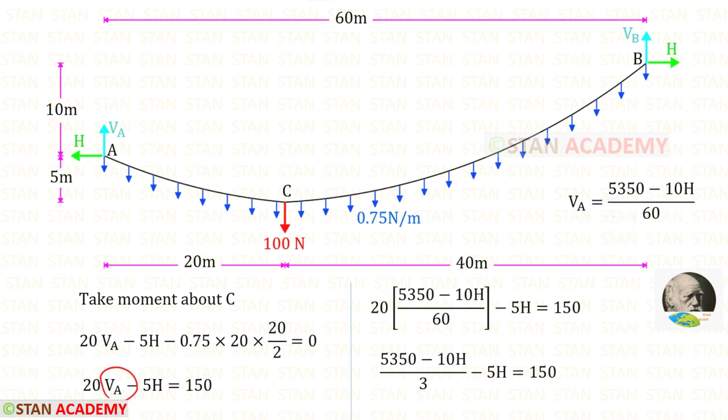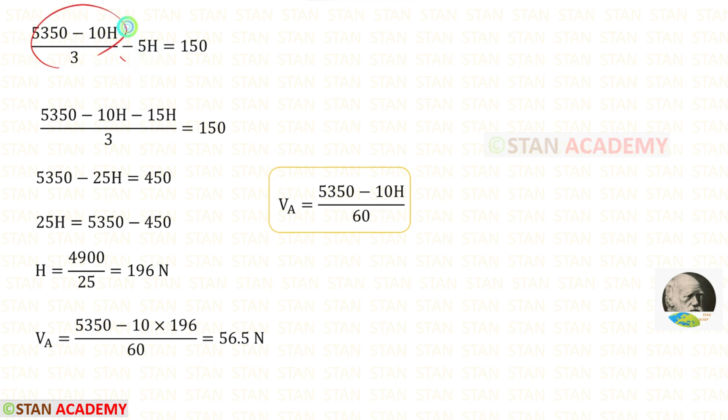For VA we can apply what we got from equation number 1. Three 20s equals 60. For these two terms we can take LCM. 3 times minus 5H gives minus 15H.